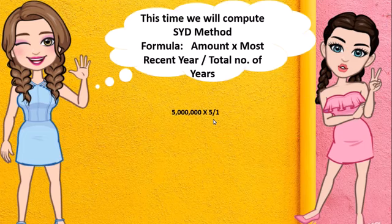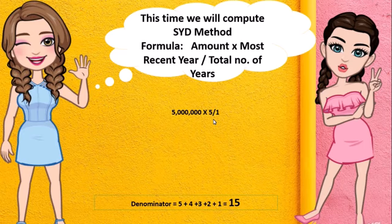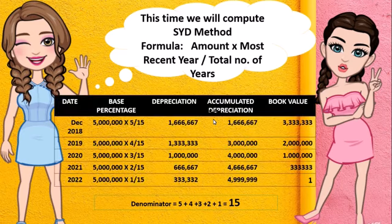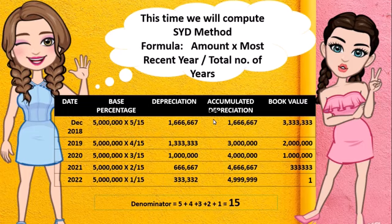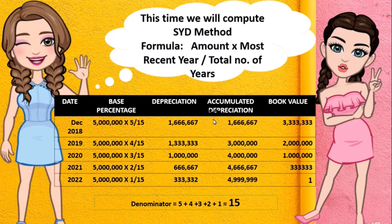For the Sum of the Years Digit Method, compute the denominator: 5 plus 4 plus 3 plus 2 plus 1 equals 15. Multiply the book value of 5,000,000 by 5 over 15 for year 2018, 4 over 15 for 2019, 3 over 15 for 2020, 2 over 15 for 2021, and 1 over 15 for 2022. For the last year's depreciation, you deduct 1 peso to maintain a remaining value of 1 peso at the end of the year.